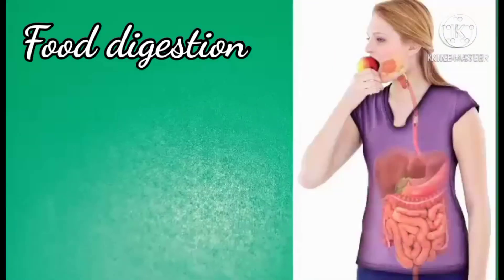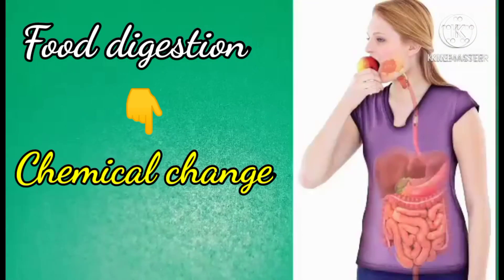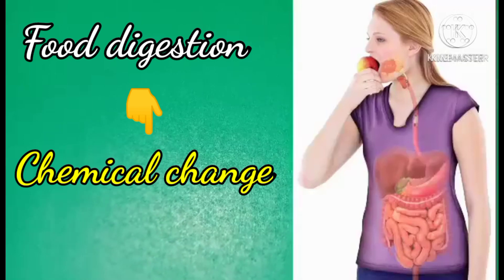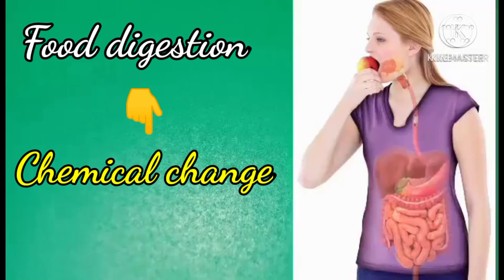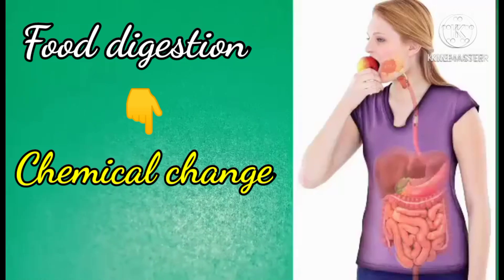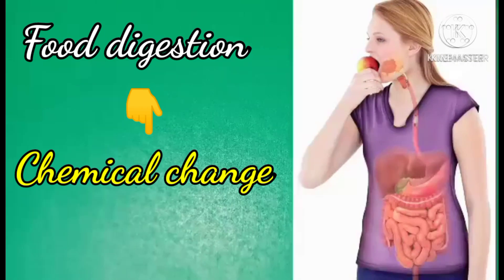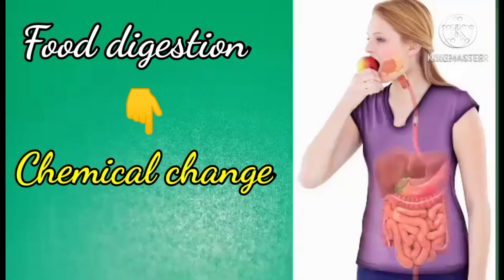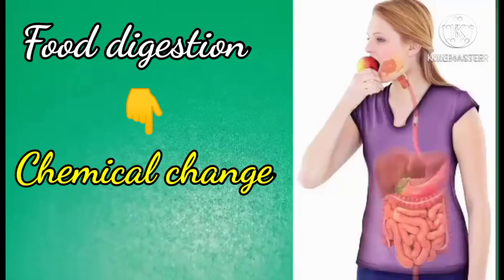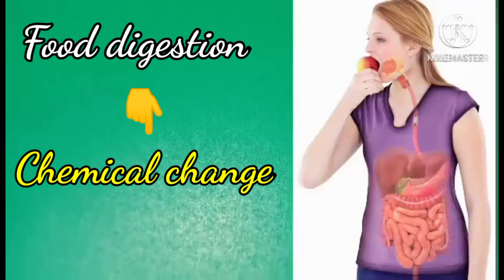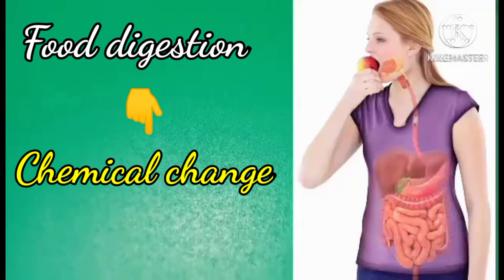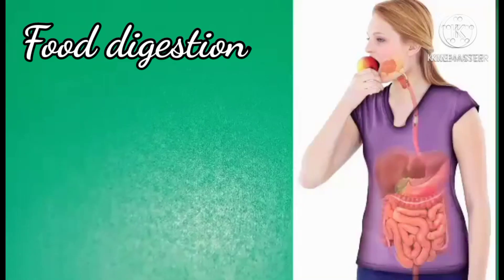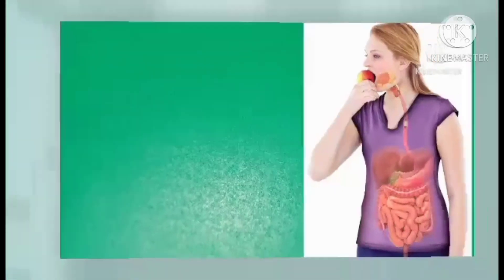Food is chemically changed in digestion when new, smaller substances are formed. These chemical changes are examples of chemical digestion. Chemical digestion begins in the mouth when enzymes in saliva begin to break down the carbohydrates. Most chemical changes in digestion occur in the small intestine.